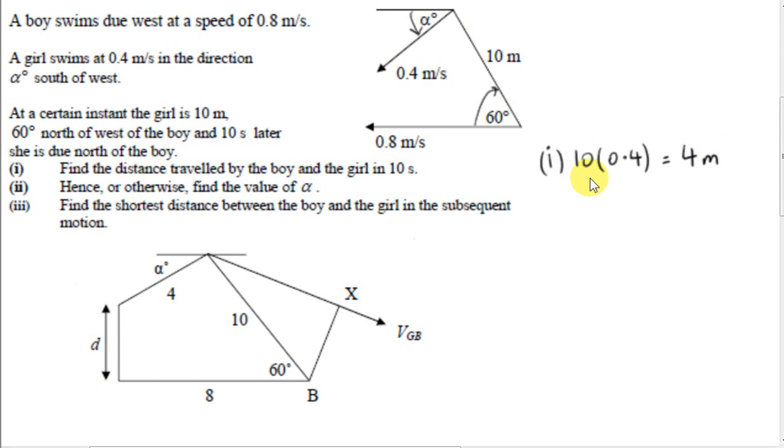Similarly for the boy, in one second, he covers 0.8 meters. So in 10 seconds, he covers 10 times 0.8, which is 8 meters. So for constant speed, distance travelled is constant speed times time taken, or speed is distance travelled divided by time taken.